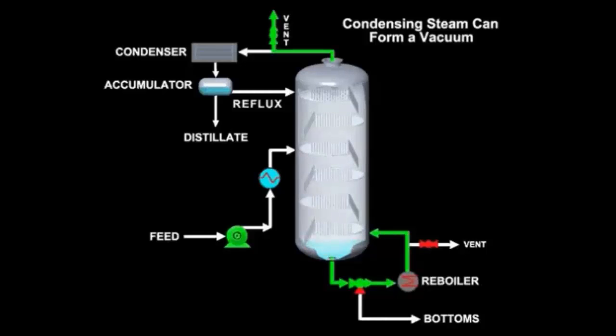After the tower has fully heated, close the vent and start the condenser. Operate the column at total reflux until all checks are complete.